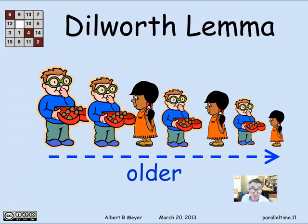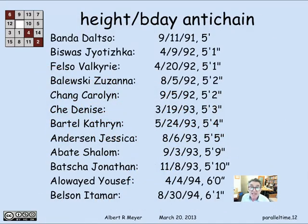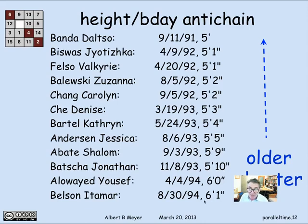If it were a chain instead, students would be getting younger as they got shorter. The more interesting case is the anti-chain in this height-birthday example. In our class, we actually found an anti-chain: here's a list of a dozen students, where someone who is 6'1" was born in August 1994, someone 6'0" was born in April 1994, all the way down to someone who is 5'0" and was born in 1991. So we lucked out — we could have only found a chain, but we actually found the anti-chain.